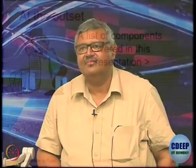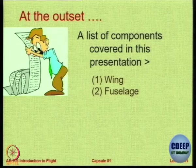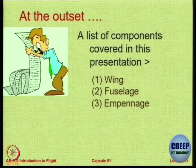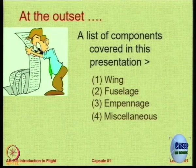I will not go into rivets and bolts and nuts, but I will go into major parts like wing, fuselage, tail, etc. So let us see what components we could cover in this presentation. We will cover the wing, which is the main component, then proceed with the fuselage or body, empennage or the tail, and then go to miscellaneous.